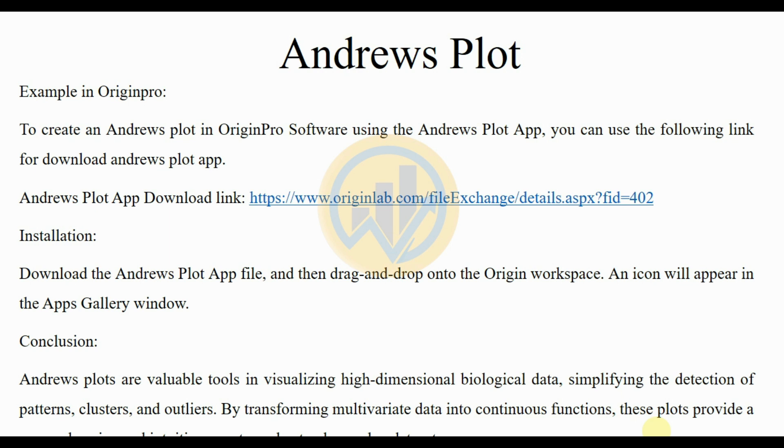The example in OriginPro: to create an Andrews plot in OriginPro software, use the Andrews plot app. You can use the following link to download the Andrews plot app. The link is mentioned in the video description box. Installation: download the Andrews plot app file and then drag and drop it into the OriginPro workspace. An icon will appear in the app gallery window.